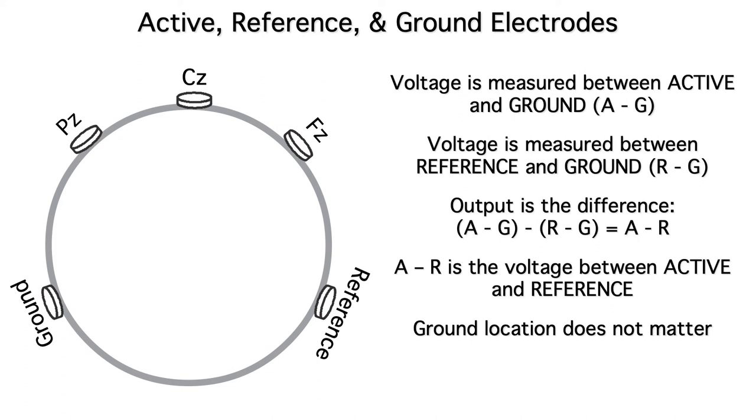Okay, there are two implications to all of this. First, the precise location of the ground electrode doesn't really matter. It just needs to be attached somewhere on the body, usually on the head. Many papers don't even mention where the ground electrode was located. The second implication is that the location of the reference matters a lot. Because our signal is effectively the active minus the reference, any activity at the reference electrode appears in our signal, but inverted because of the subtraction.